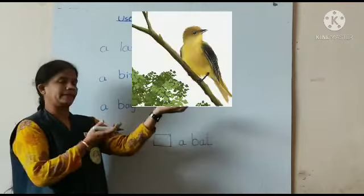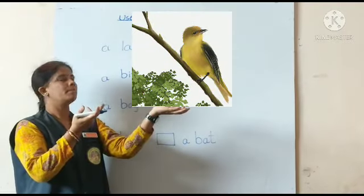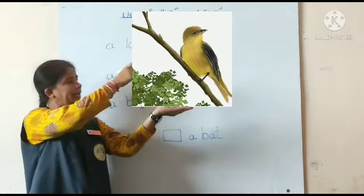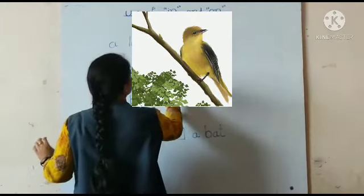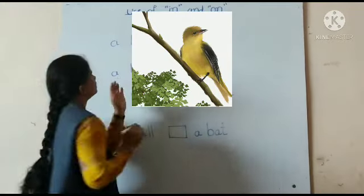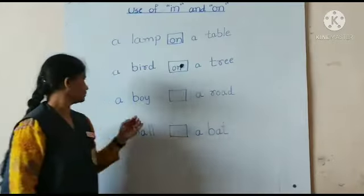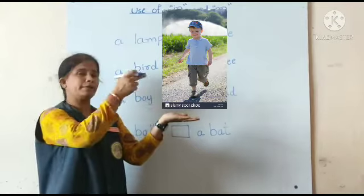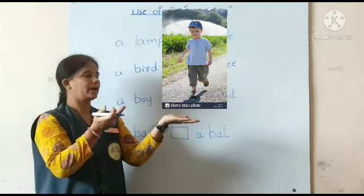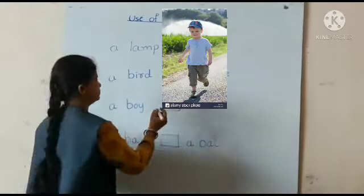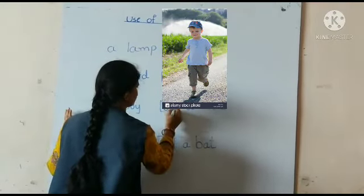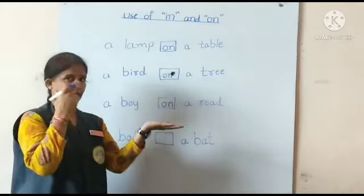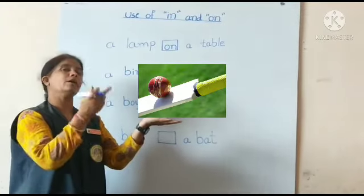A bird, a tree. Where is the bird, children? A bird is on a tree. Where is the bird, children? A bird is on a tree.